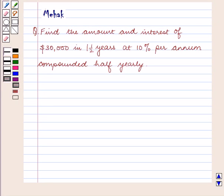Hello and welcome to the session. In this session, we are going to discuss the following question: Find the amount and interest of $30,000 in 1.5 years at 10% per annum, compounded half-yearly.